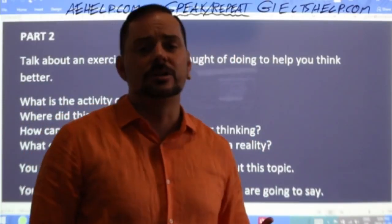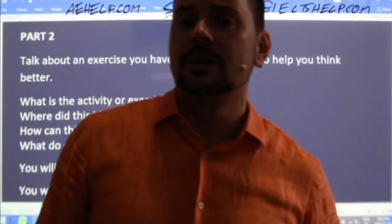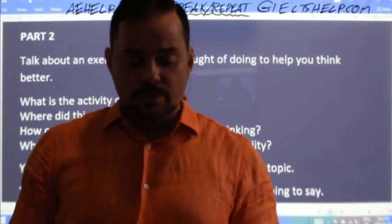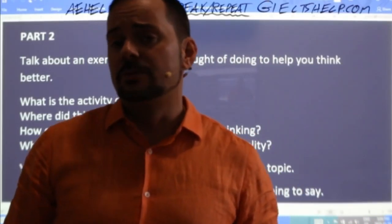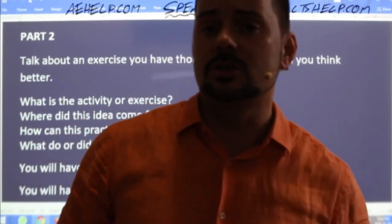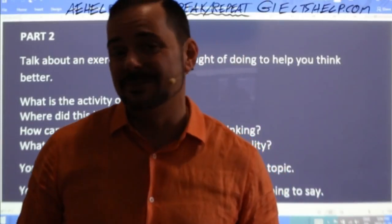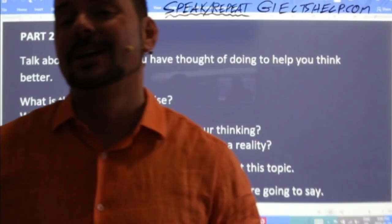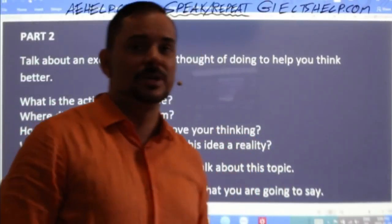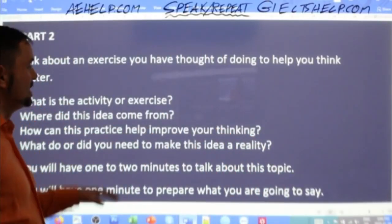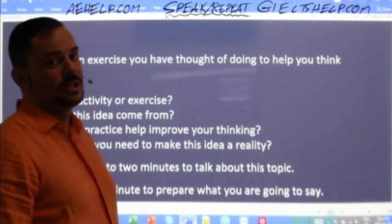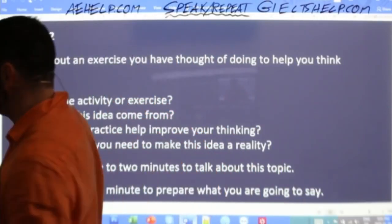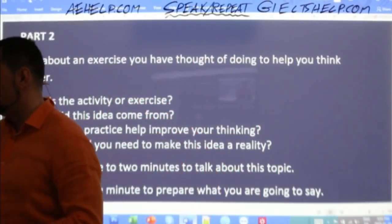A lot of people say children learn English or languages much faster than adults. Sure, their brains work really well. But one reason why children learn languages so efficiently is because they're not shy — they're not shy to say whatever they think, whenever they want. If you want to learn English quickly, that's what you should do. Make sure to speak as much as possible. When learning a language, think about speaking with the confidence of a three-year-old. Lots of confidence. Lots of speaking.